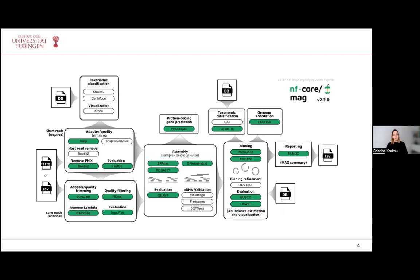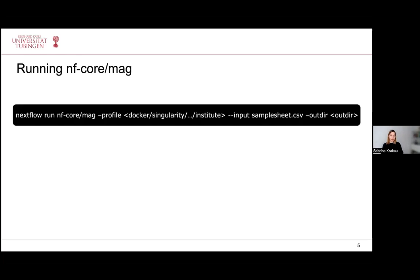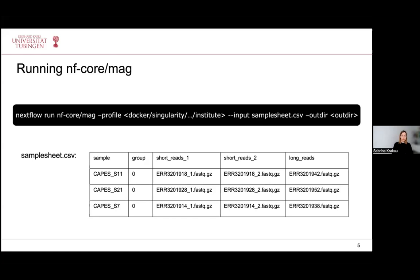Here you can see an overview of the pipeline. It starts with different pre-processing steps and QC, then the actual assembly is performed with a final genome binning step. In green you can see the processes and tools that are run by default. To run the pipeline, you provide a Nextflow command with default settings and a sample sheet as input. The sample sheet contains five columns: the first column contains a sample name, the second contains a group name.